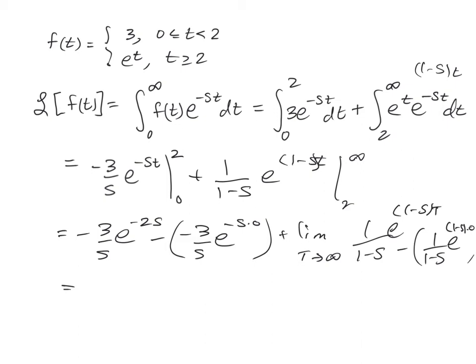Okay, so what's left then is going to be negative 3 over s e to the negative 2s plus 3 over s. And then back here, this limit as normal is going to go to 0, provided that s is greater than 1. So that's going to be plus 1 over s minus 1.